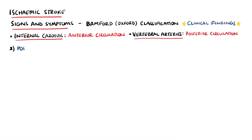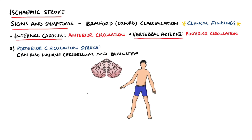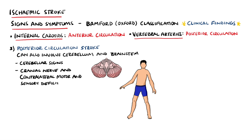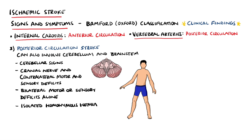Next, we have the posterior circulation syndrome, which can also affect the cerebellum and the brainstem, and therefore often presents with cerebellar signs such as ataxia and nystagmus. Other features include ipsilateral cranial nerve and contralateral motor or sensory defects, bilateral motor or sensory defects alone, or an isolated homonymous hemianopia.